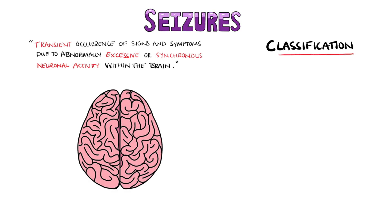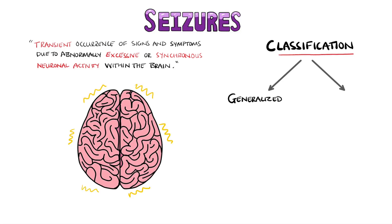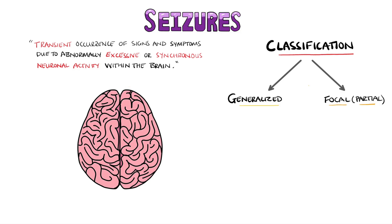The first thing to consider is where the seizure originated in the brain. Generalised seizures begin involving both hemispheres of the brain, previously known as primary generalised seizures. Focal seizures originate from an area on one hemisphere. If seizures begin on one hemisphere and then involve both sides, they are known as focal to bilateral seizures, previously called secondary generalised seizures.